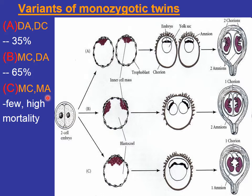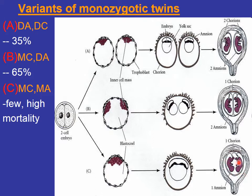The rarest variant, which shows high mortality, occurs when the embryoblast separates very late — just before the appearance of the primitive streak. At that stage, separation is sometimes incomplete, resulting in conjoined twins. If not conjoined, the twins are so close that they do not develop their own amniotic cavity; instead, they share a common chorionic cavity, a common amniotic cavity, and a single placenta.